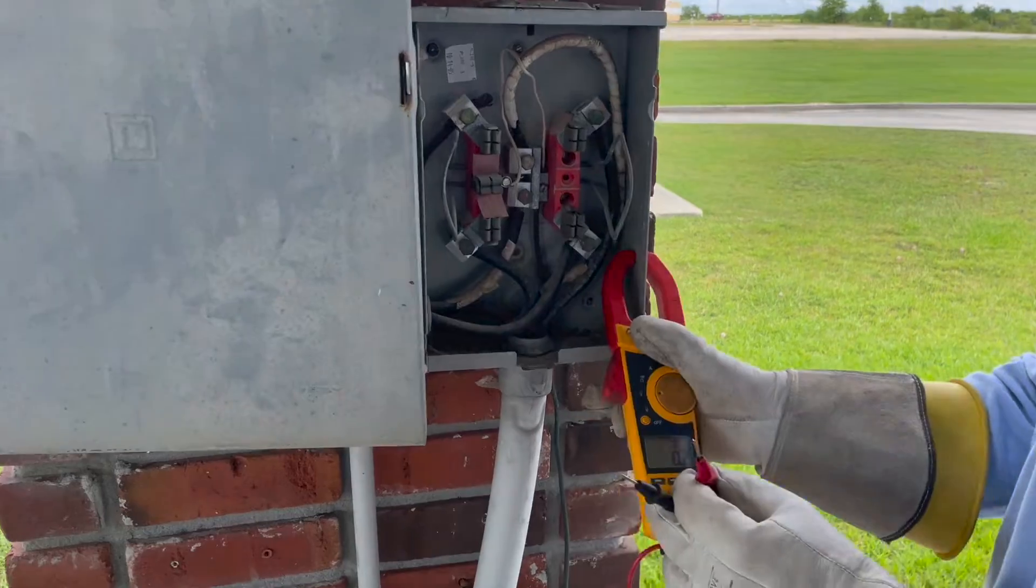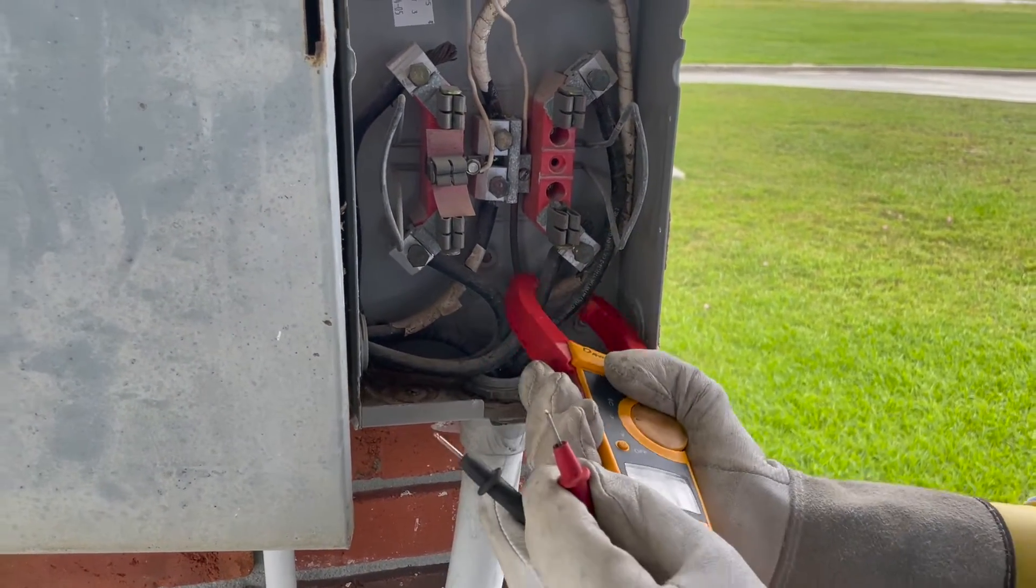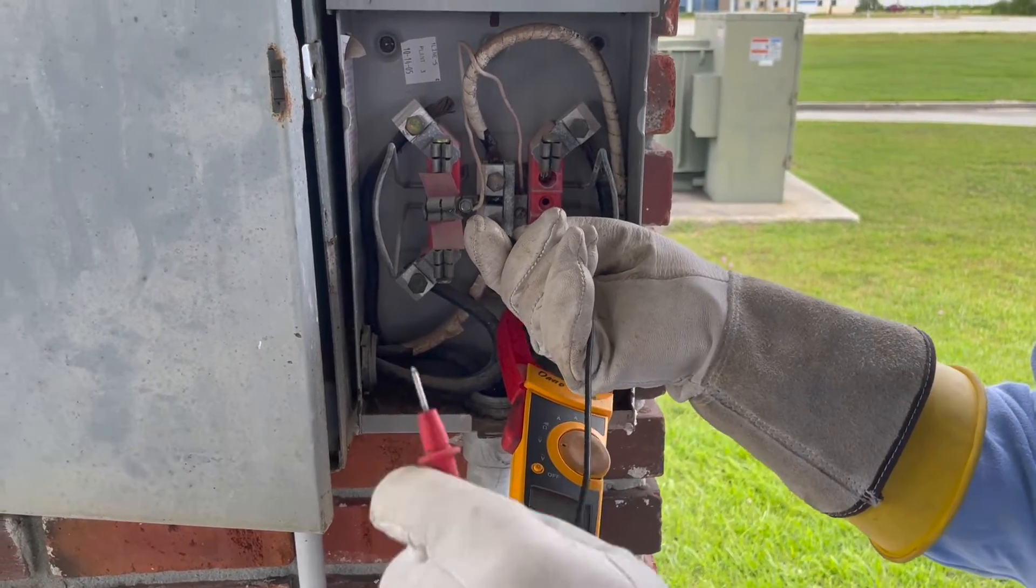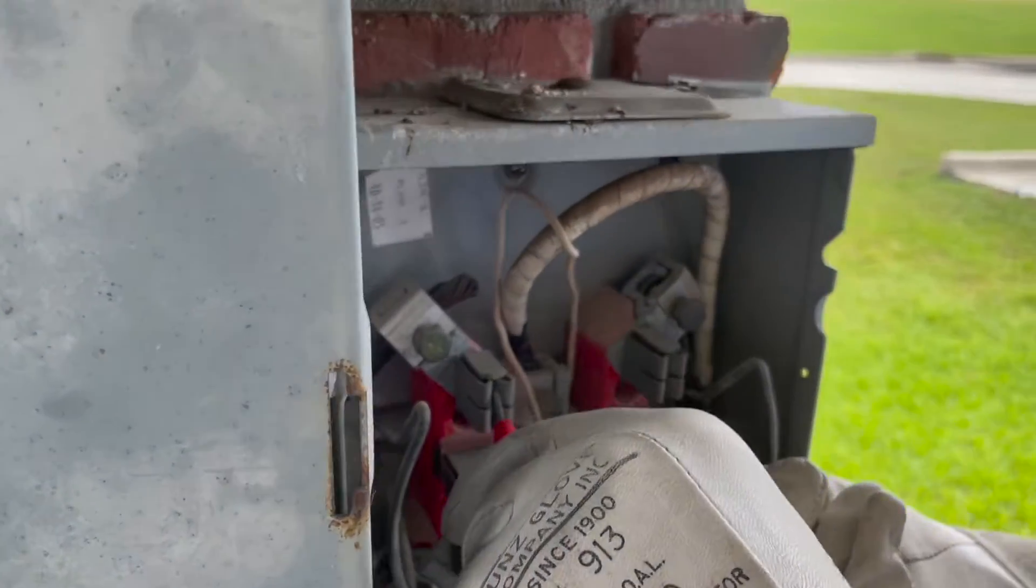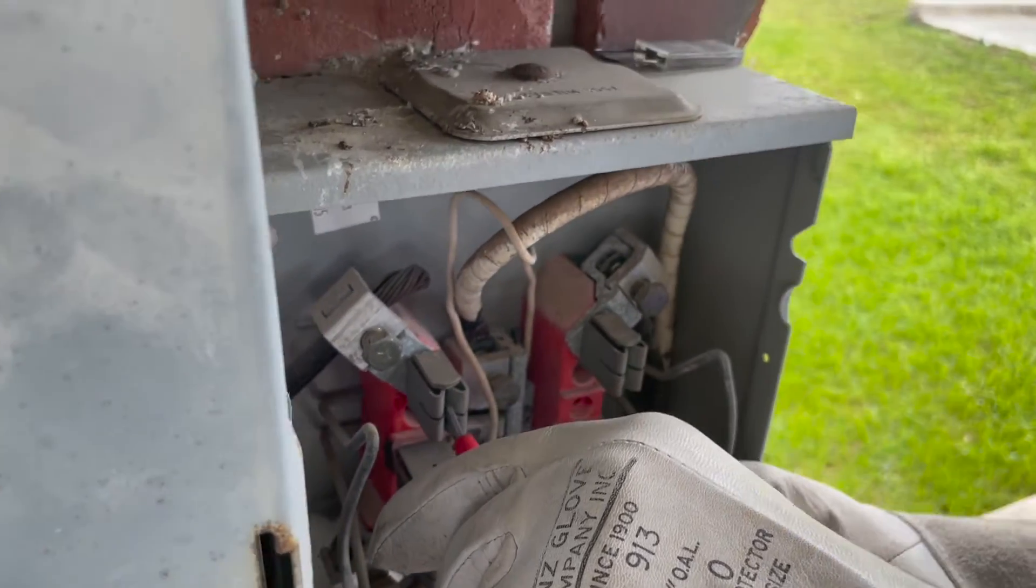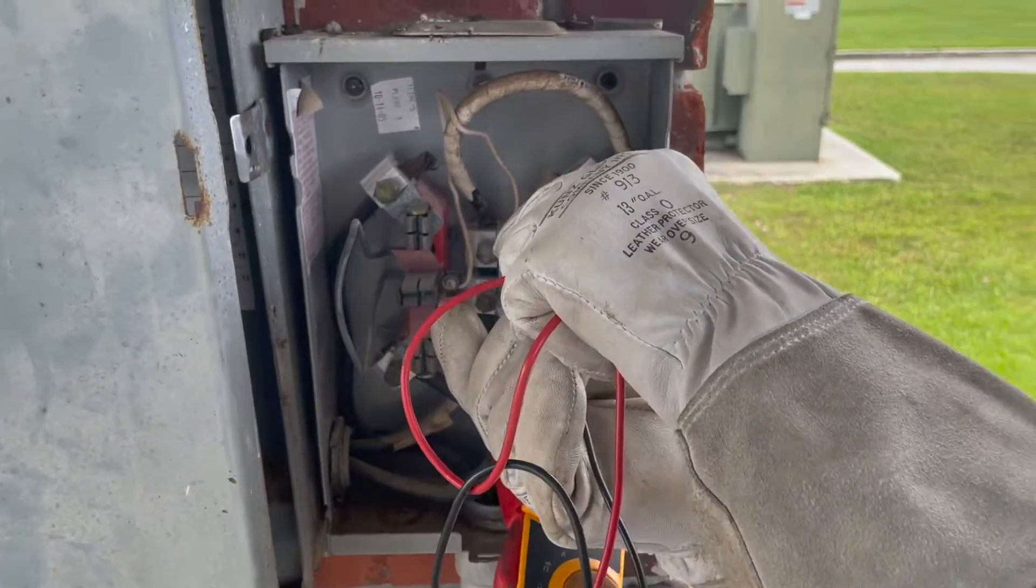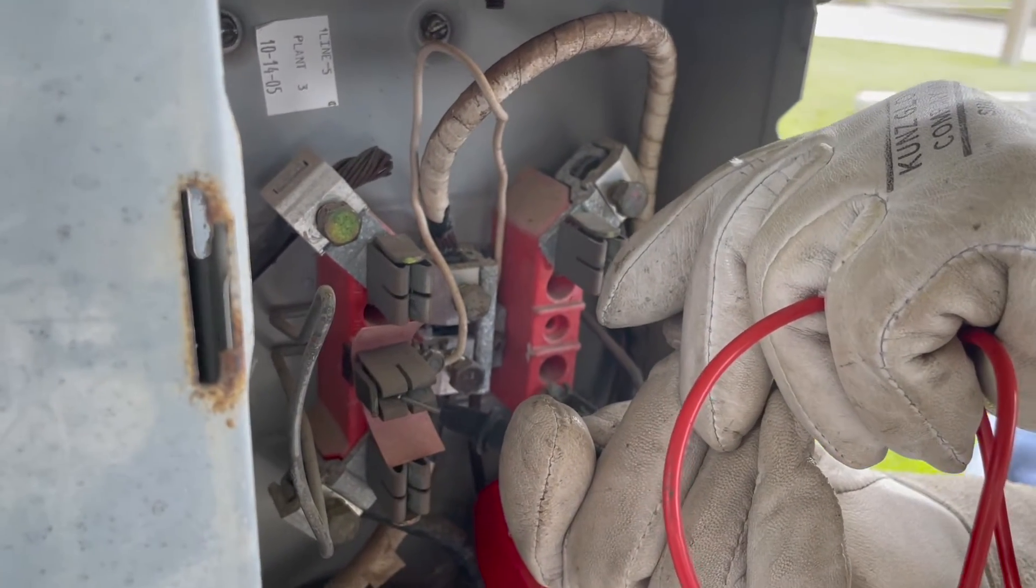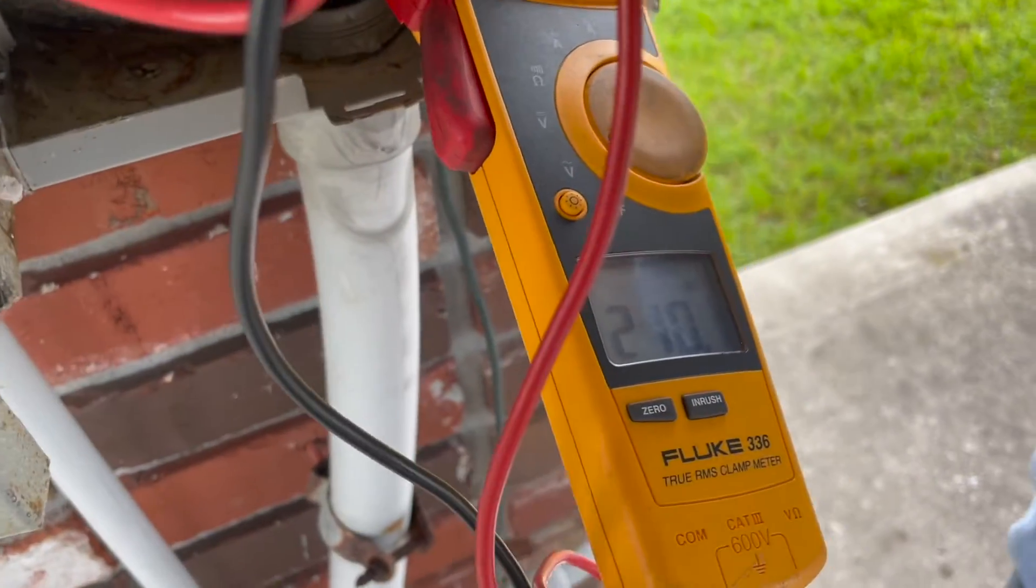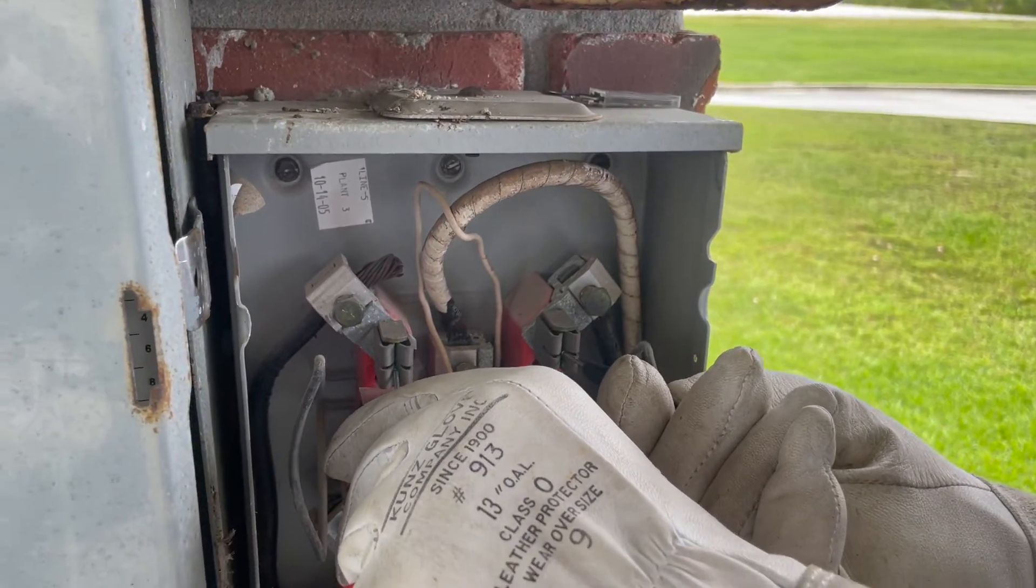The service would come up and you would check the voltages. These are going to be your voltages. This is your ground, so you're going to go phase to ground: 120 volts phase to ground, 123 volts. Phase to phase we have 210 volts. This is a 120/208 service.